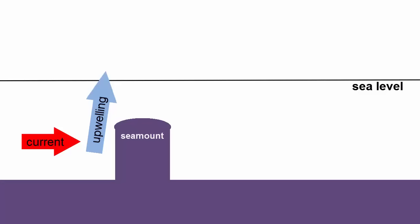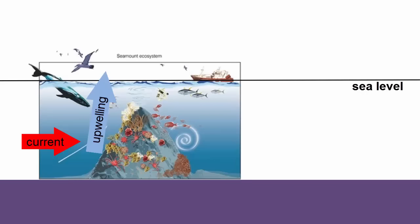Finally, when we have currents colliding with underwater seamounts, the seamounts will shove the water upward and also create a zone of upwelling on the surface nearby. These are especially interesting upwelling zones because they attract lots of marine life to the area, but there doesn't have to be any nearby land — an oasis in the center of the ocean.